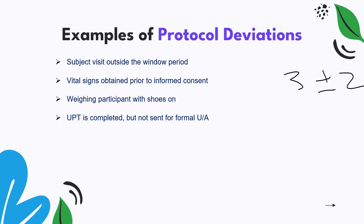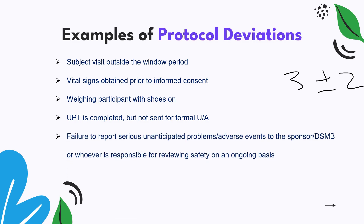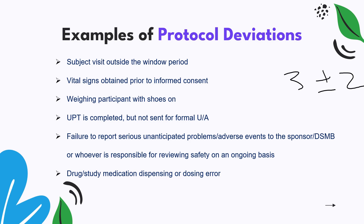If a participant has been weighed with shoes on, that is an incorrect weight and again a protocol deviation. If a urine pregnancy test has been done for a female subject but the sample is not shared, you would not know the pregnancy status — that is also a protocol deviation. Another example is failure to report any adverse event to the sponsor or the DSMB team. Any study drug dispensing error or dosing error is also a kind of protocol deviation. Any activity conducted outside the defined protocol would be considered a deviation.